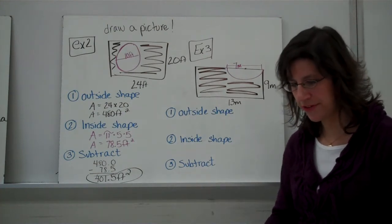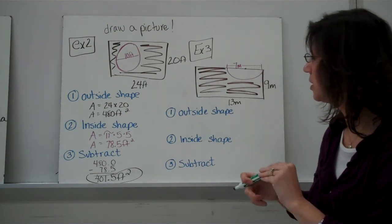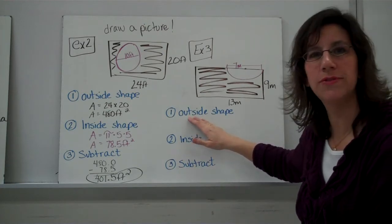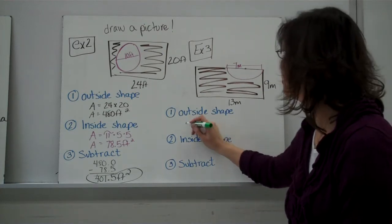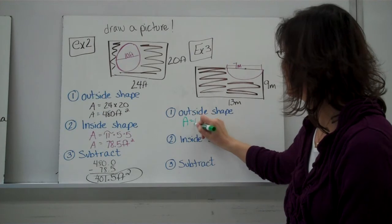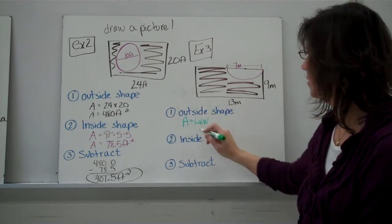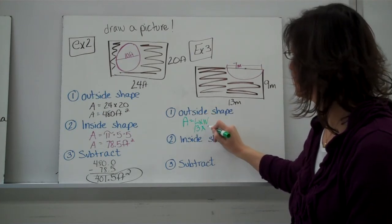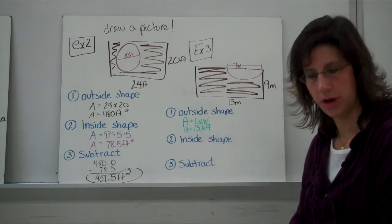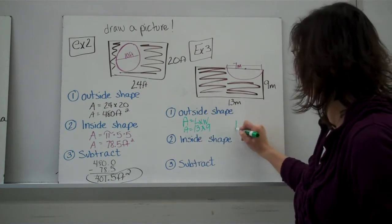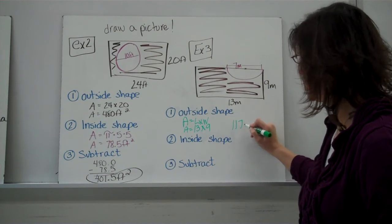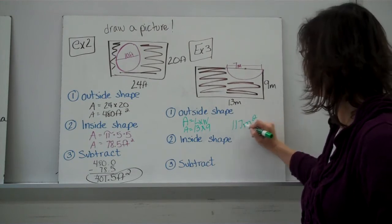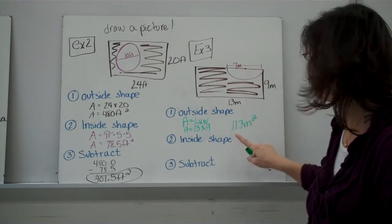Alright, I've already previously calculated this out, so I'm going to go over fairly quickly here. We've got the outside shape, which of course is a rectangle. So, you should be doing, area of a rectangle is length times width. So, you should have been doing 13 times 9. Right? So, you should have gotten 117 meters squared. 117 meters squared.